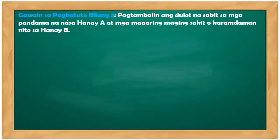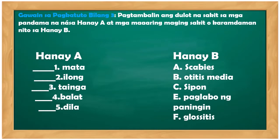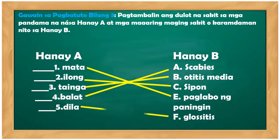Gawain sa bilang pagkatuto bilang tatlo: pagtambalin ang dulot na sakit sa mga pandama. Hanay A: mata, ilong, tainga, balat, dila. Hanay B: scabies, otitis media, sipon, paglabo ng paningin, glossitis. Ang ating sagot: number one — E, number two — C, number three — balat ay scabies, dila.